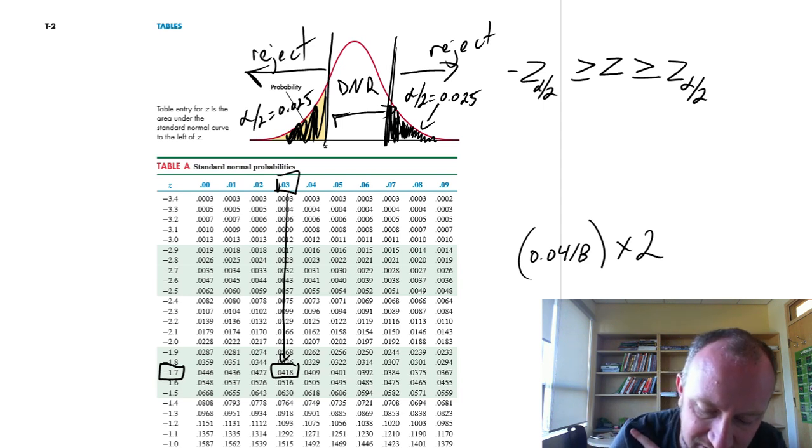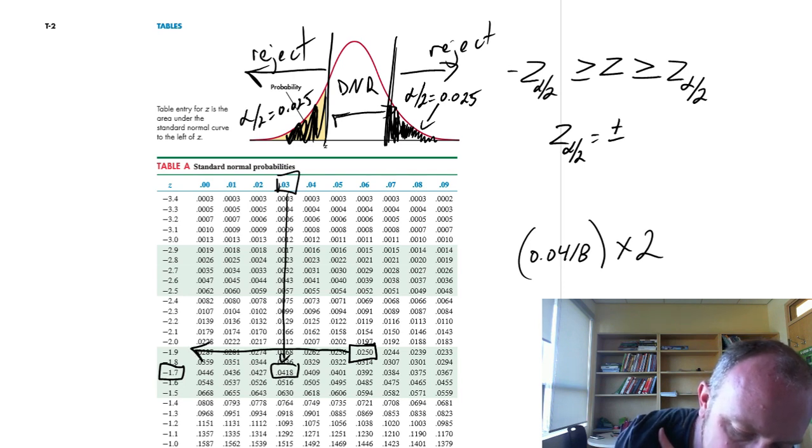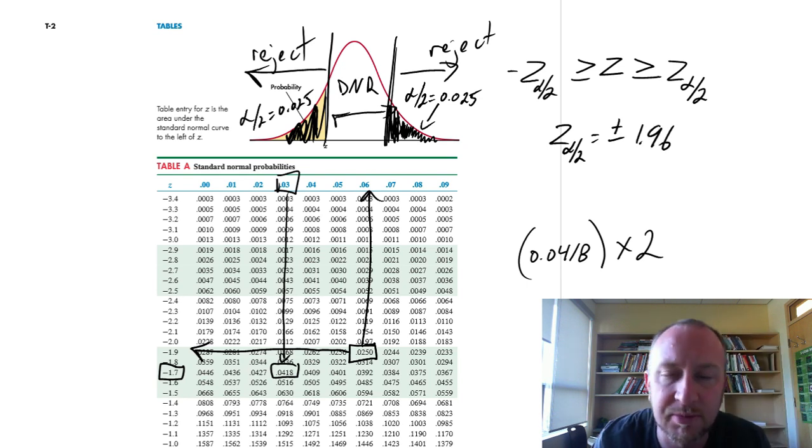So alpha divided by 2 is 0.025. So if you come through this table, I find it's exactly right there. So that gives me a critical value, z alpha by 2, plus or minus 1.96. One of the more common values that we'll pull out of this table.